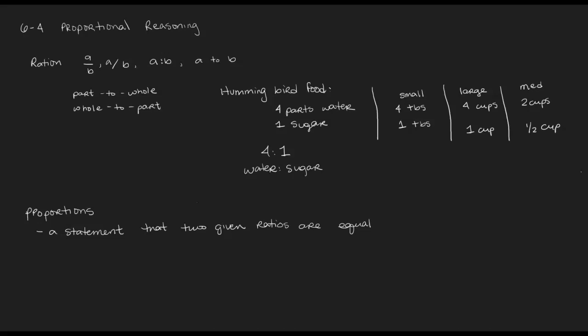Proportions are basically equations that use our ratios. So a proportion is a statement that two given ratios are equal. For example, with the hummingbird food, I could say one tablespoon of sugar to four tablespoons of water is equal to the same proportions as one cup sugar and four cups water. We could argue that tablespoon divided by tablespoon, cup divided by cup, you just get one to four. It's the same ratio.